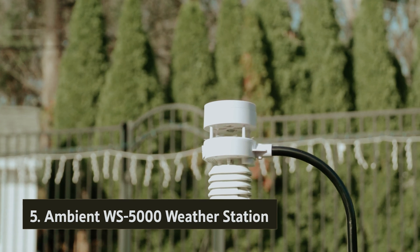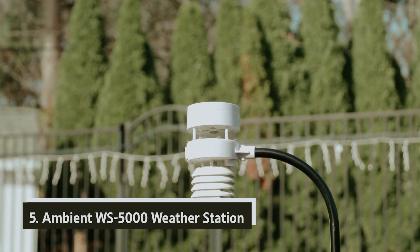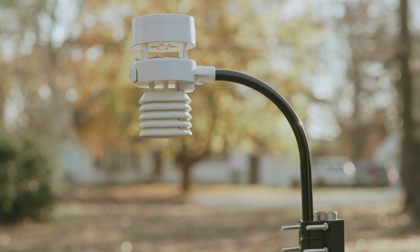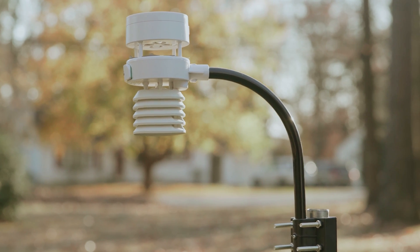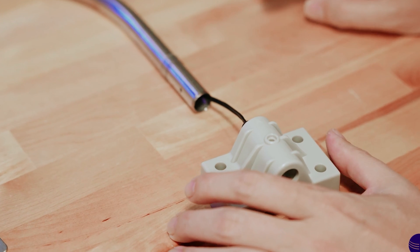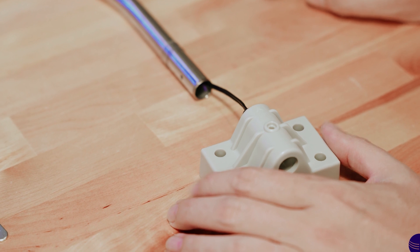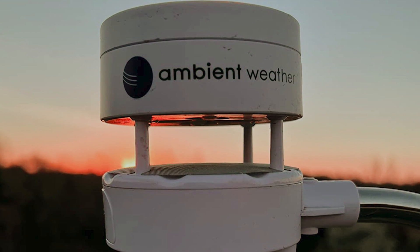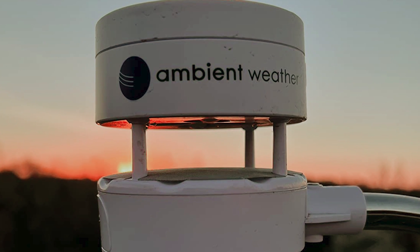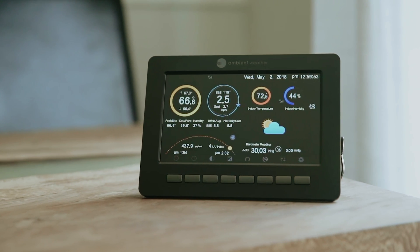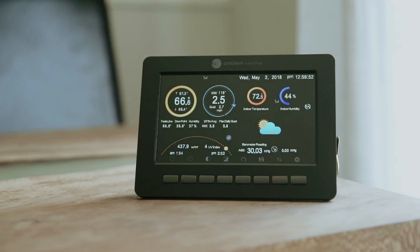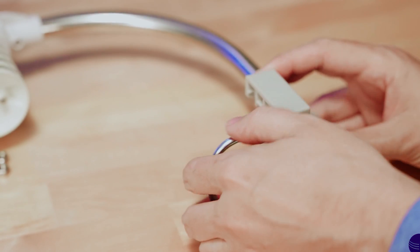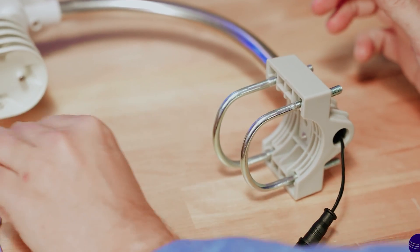Starting our list with number five, we have the Ambient WS5000 weather station. The Ambient Weather WS5000 stands out as one of the most feature-rich weather stations available today. If you're someone who values comprehensive weather data, this unit is designed with you in mind. While it does not include a lightning detector in the base package, you can easily enhance its functionality by adding an optional lightning sensor, along with up to 15 other sensors. This flexibility allows you to customize the system to suit your specific weather tracking needs.